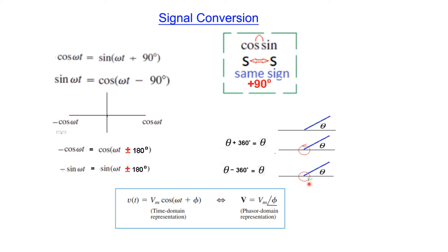Finally, keep in mind that if you want to convert from the time domain to the phasor domain, the signal has to be in cosine form. It is not a must, but it makes life easy. So we convert any signal — if it is in sine, we convert it to cosine form first — then we can directly write the phasor as the magnitude Vm at angle φ.